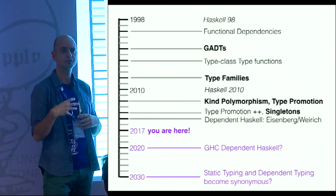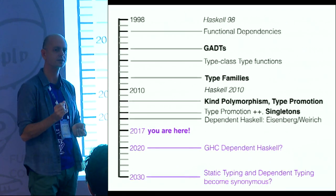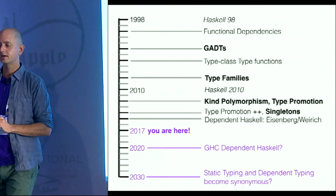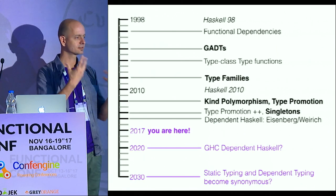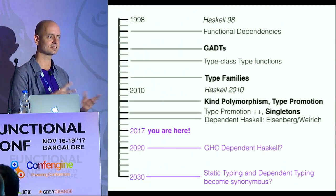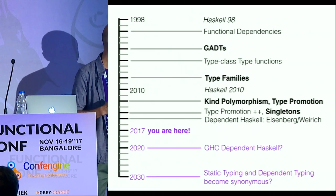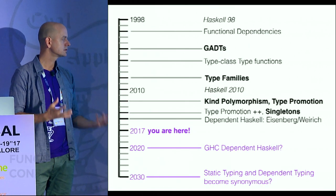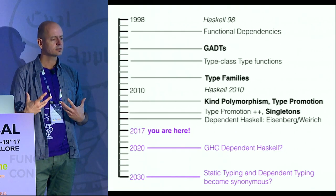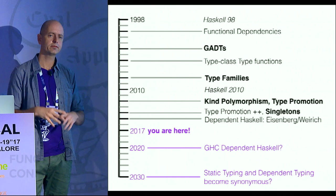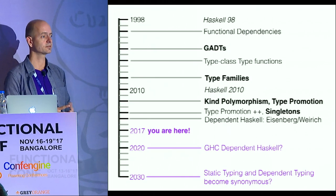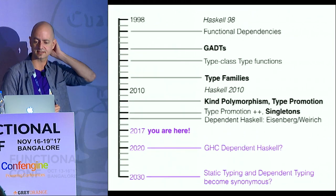If you want to learn dependently typed programming in Haskell, you will work much harder than just taking Idris in. Although unfortunately I think you cannot learn Idris without knowing Haskell a bit, because it's the same syntax. And I wonder: in another ten years or so, if static typing and dependent typing aren't going to become synonymous — because dependent typing, even partial, is so much more powerful. If you experience it, you will have the same experience as you do when you feel first-class functions for the first time. It's like a tectonic shift.